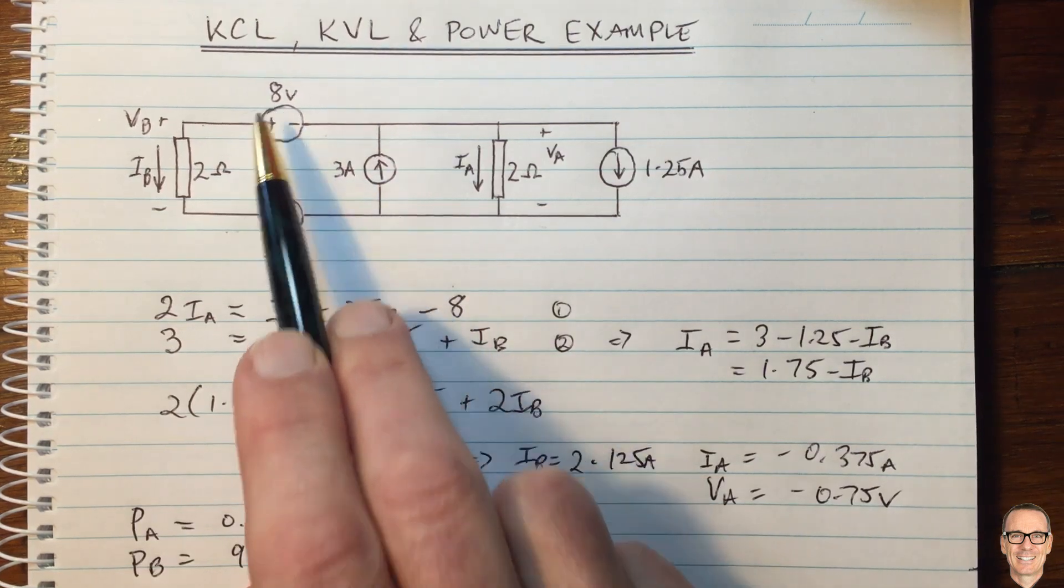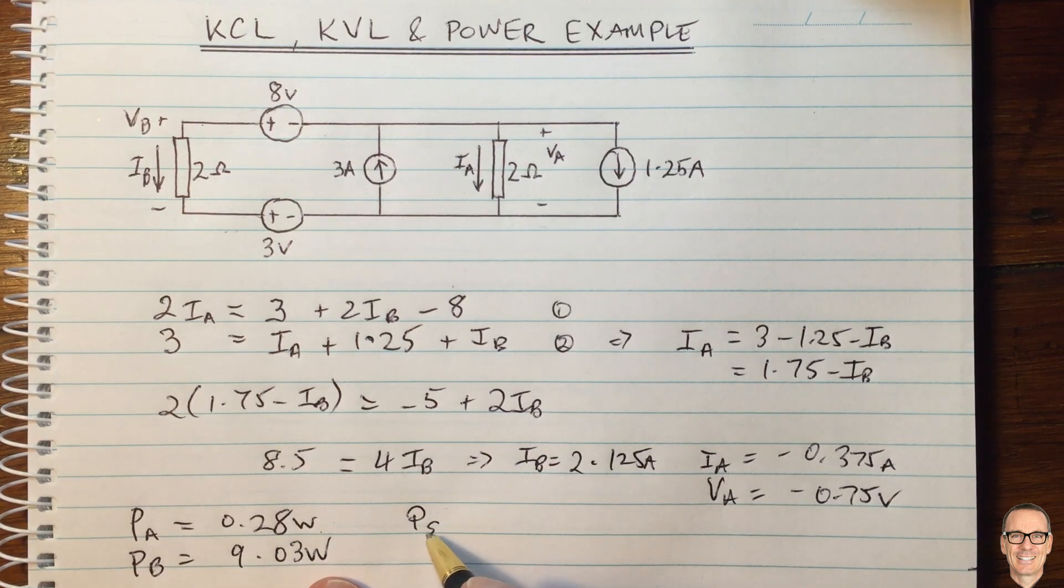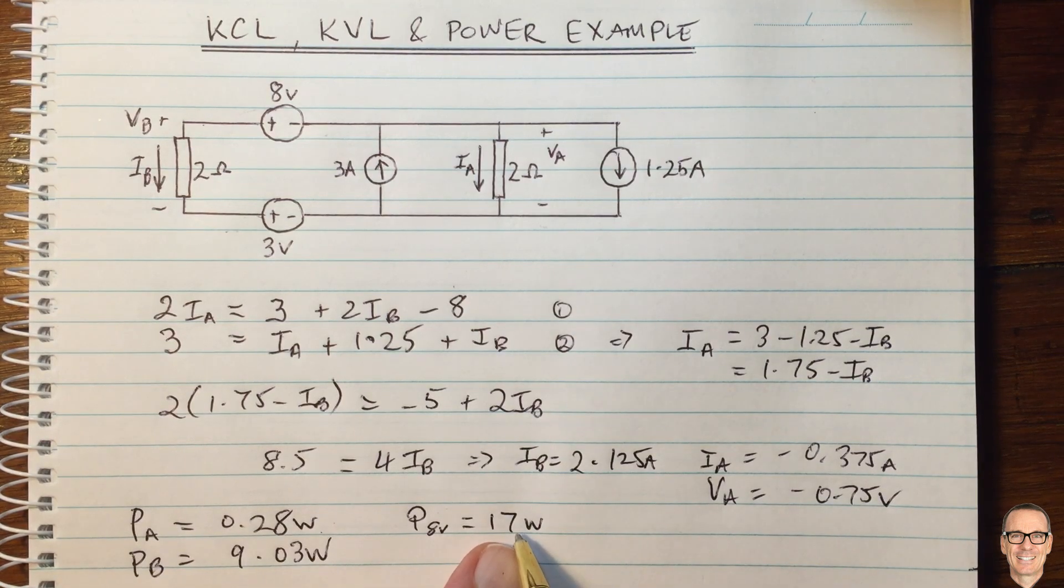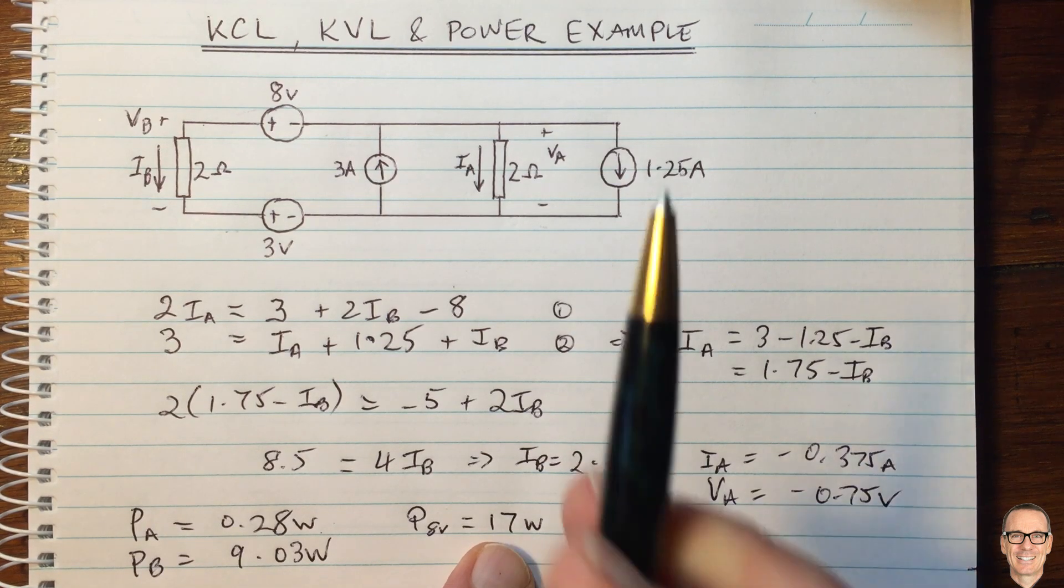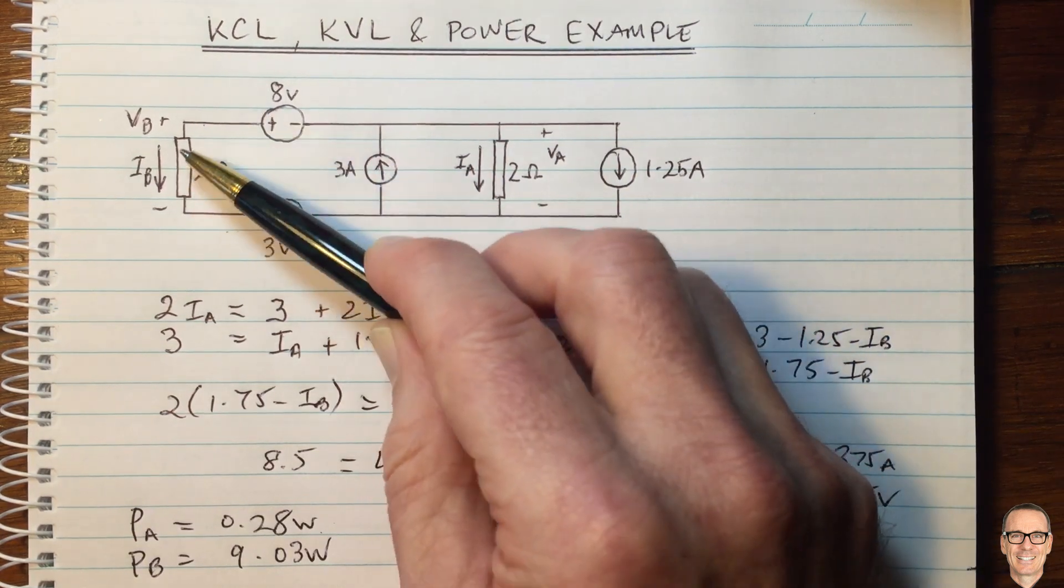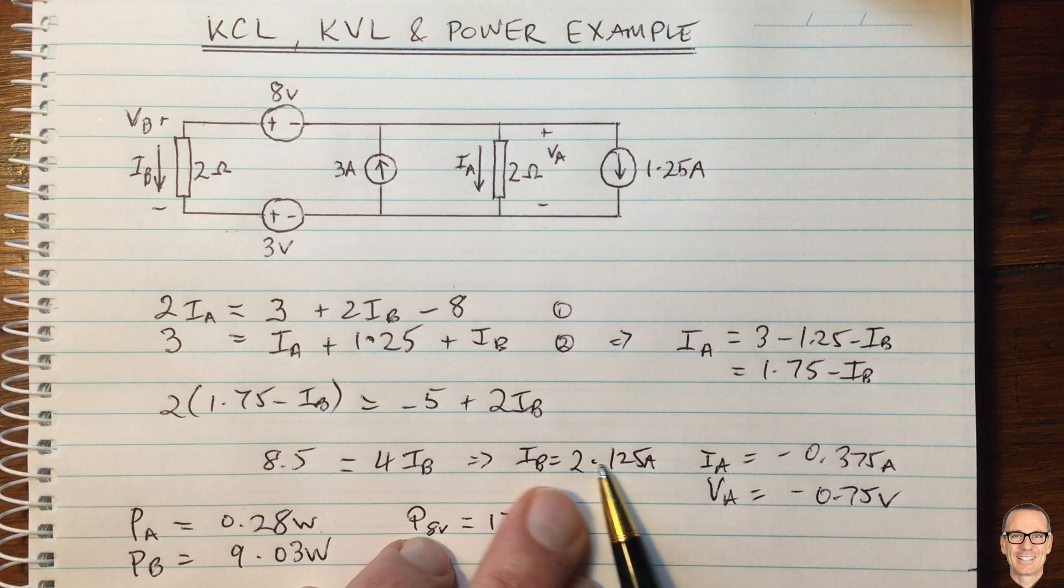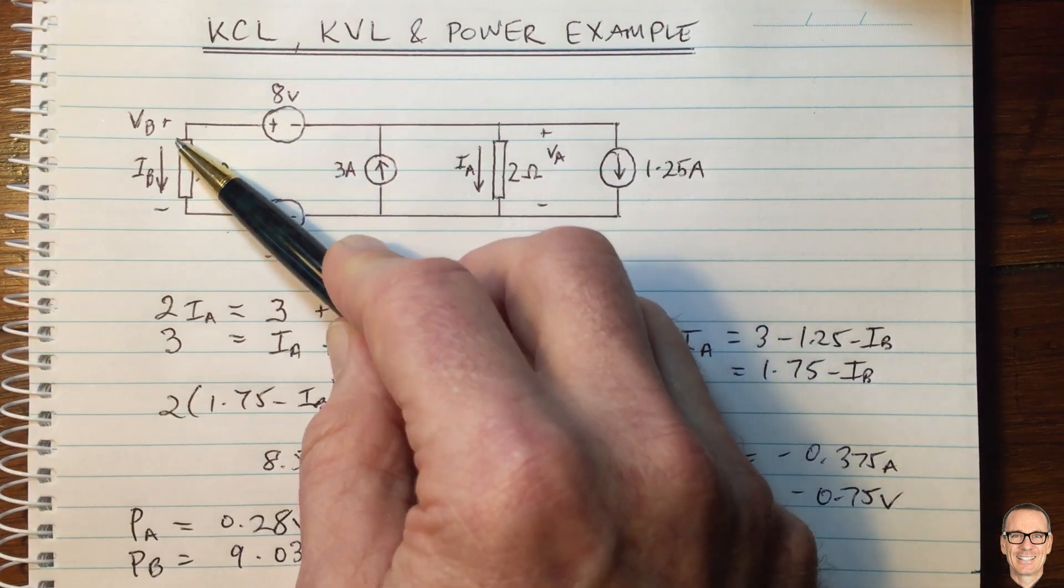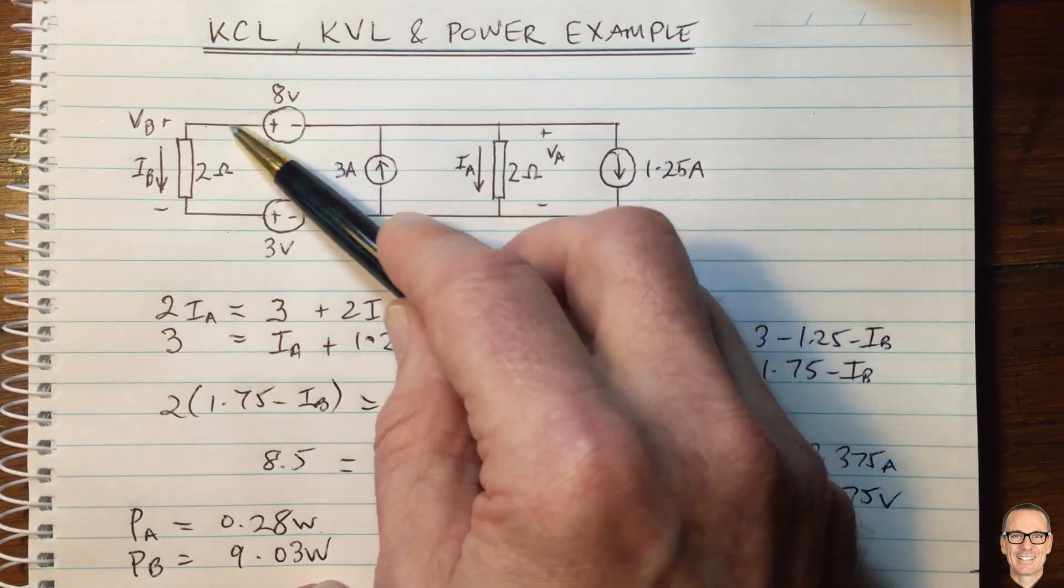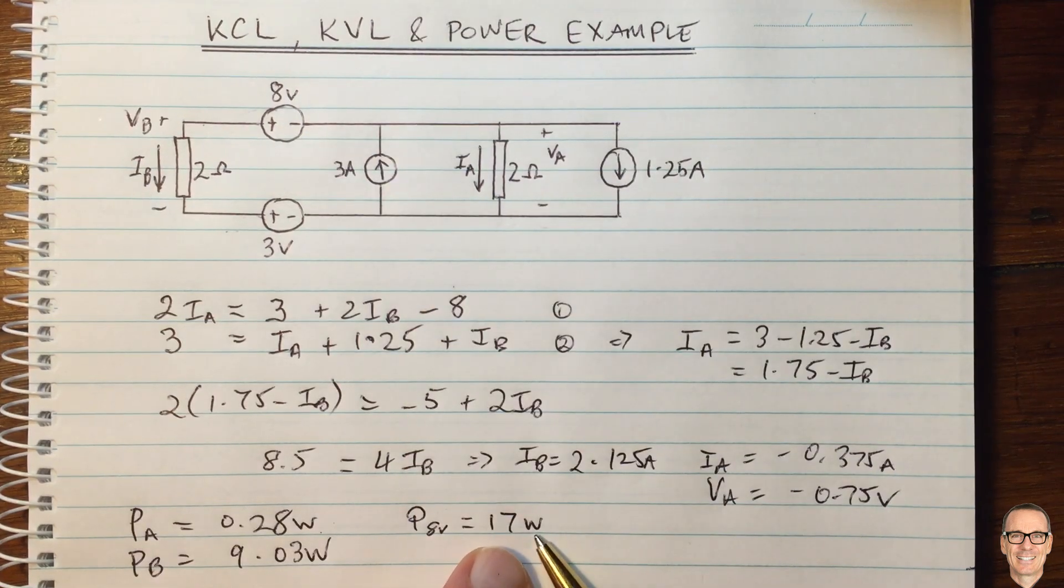But we can also be interested to look at the power in these sources here. So, for example, the power in the 8-volt supply equals 17 watts. That's a positive power, and that means that that is supplied. We can see that that power is here because it's 8 volts multiplied by the current. And the current equals IB. IB here equaled 2.125, and it's coming in the direction from positive out of the positive, because IB is positive. So that current is coming out of the positive terminal of that 8-volt supply. And so, therefore, it's a positive power.